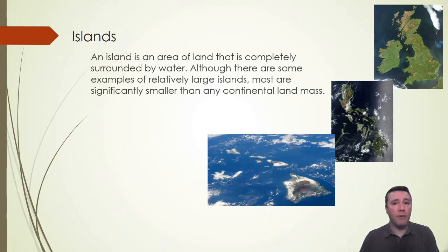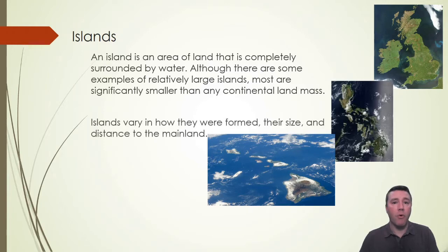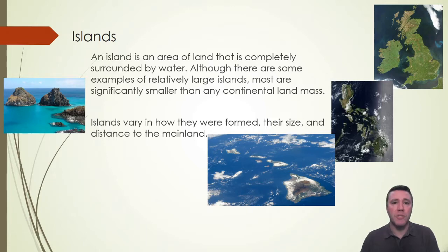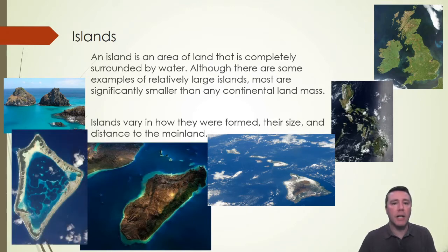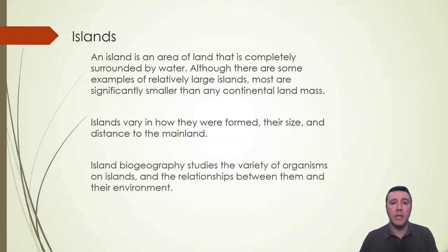Geologically and geographically, islands vary in how they were formed, how large they are, and how far they are from continental landmasses. Some islands exist as jagged rocky protrusions from the sea, like Fernando de Noronha off the coast of Brazil, or like Madagascar off the southeast coast of Africa — one of the world's largest islands. Still others are the result of long-dead, collapsed, or eroded volcanoes, like this atoll. Island biogeography studies the living things and the relationships between them and their environment on islands such as those.